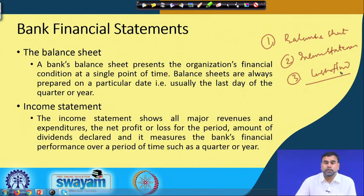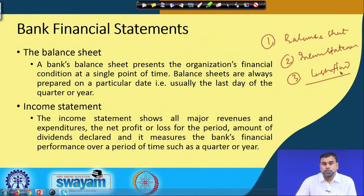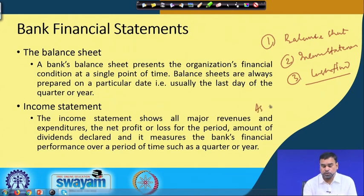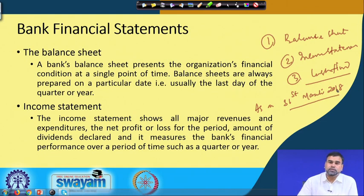If you know what the balance sheet is and how it can be defined — the balance sheet basically provides the organization's financial condition at a single point of time. Any company's balance sheet, including the bank's balance sheet, is always prepared on a particular date, usually the last day of a quarter or the year. For example, whenever we talk about a balance sheet, we say 'as on 31st March 2018' — meaning what is the financial condition or position of that company on that date, as reflected through the balance sheet.